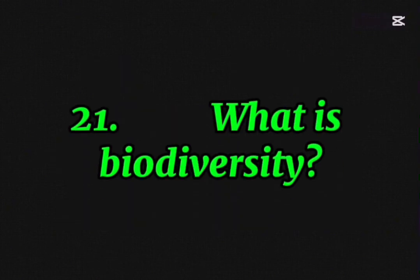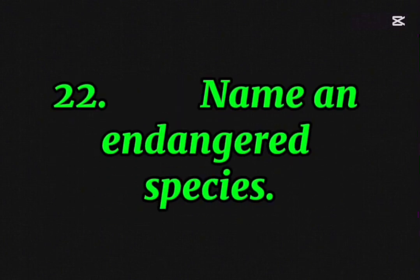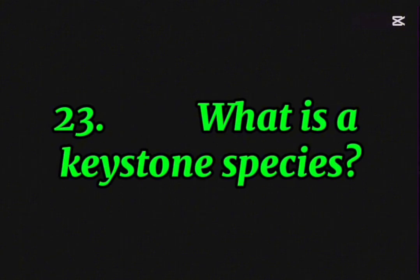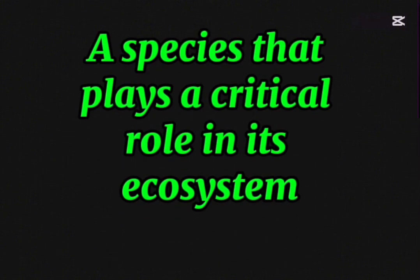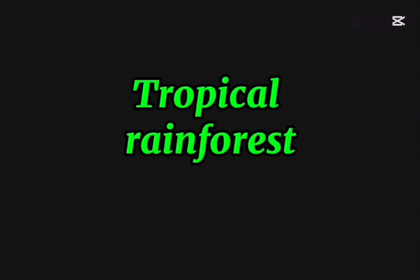Twenty-one, what is biodiversity? Variety of life in an ecosystem. Twenty-two, name an endangered species. Giant panda. Twenty-three, what is a keystone species? A species that plays a critical role in its ecosystem. Twenty-four, what kind of ecosystem is the Amazon? Tropical rainforest.